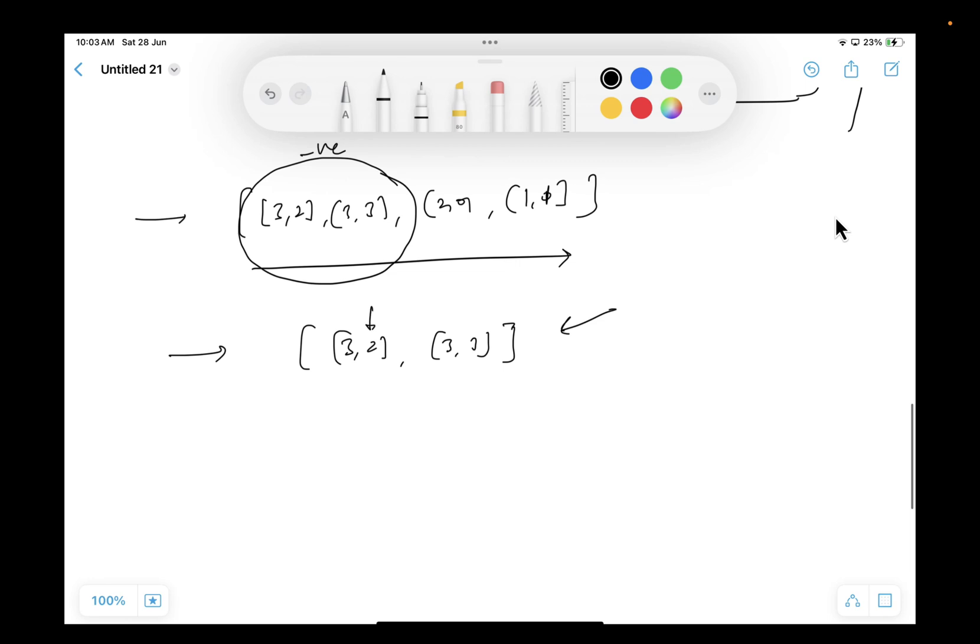So on the basis of their indices, just sort them in increasing order. A comma B, return A[1] minus B[1]. Sorted in increasing order. So apply the custom sorting here.